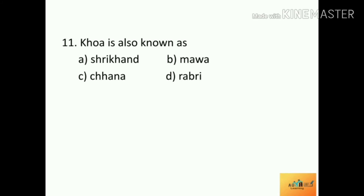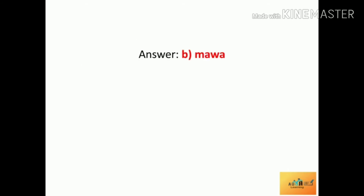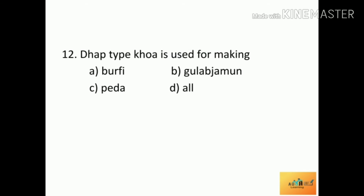Next question: Khoya is also known as — Option A: shrikhand, Option B: mawa, Option C: chana, Option D: rabri. The correct answer is mawa. Khoya is otherwise known as mawa.